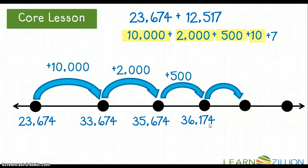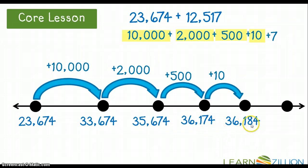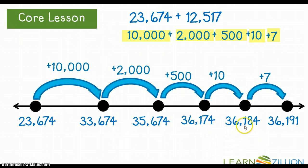Now I'm going to add 10 to 36,174, which gives me 36,184. My last number to add is 7, so 36,184 plus 7 is 36,191.